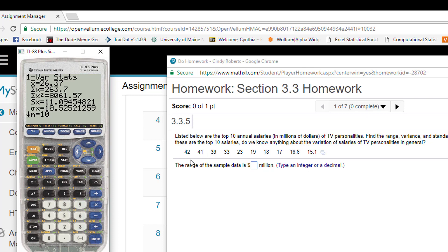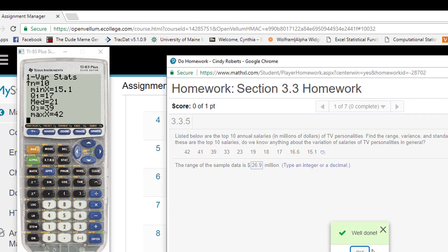First of all, it asks for the range. The range is found by taking the max, which is 42, minus the min, which is 15.1. So 42 minus 15.1, and I get 26.9. Well done, good job, Cindy.